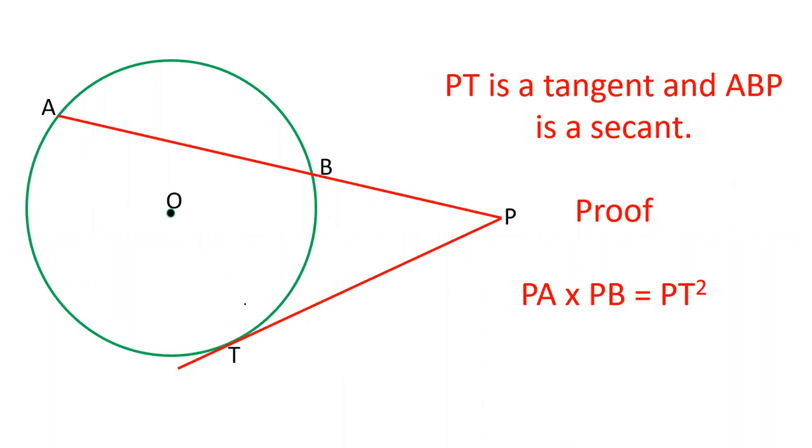In today's video, we are going to learn a theorem of circle in which there is a tangent given PT and ABP is a secant. That is, a chord AB is extended to point P and from P, PT is drawn.